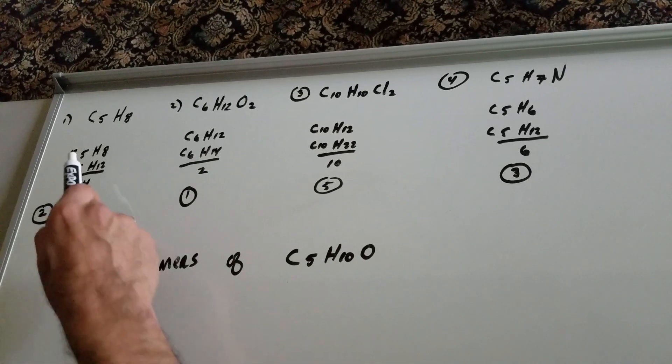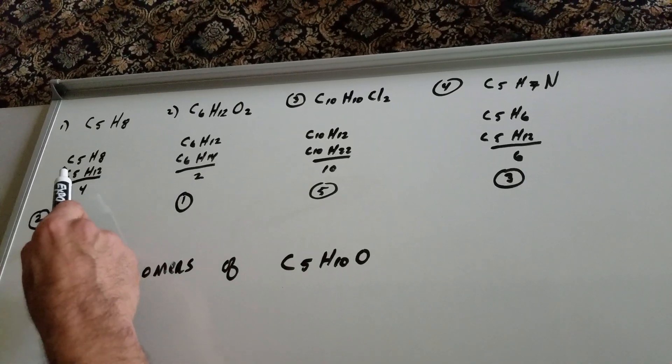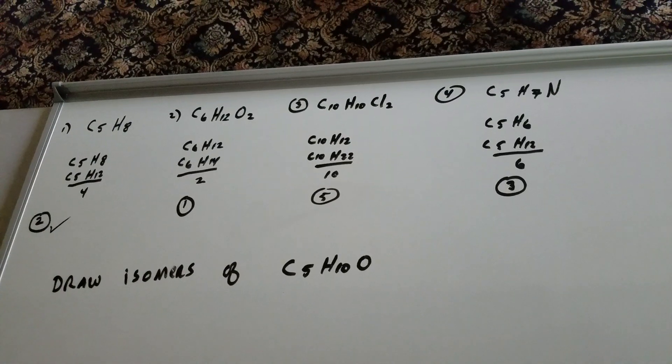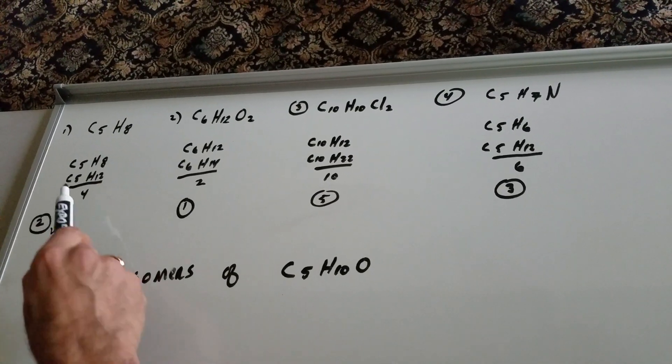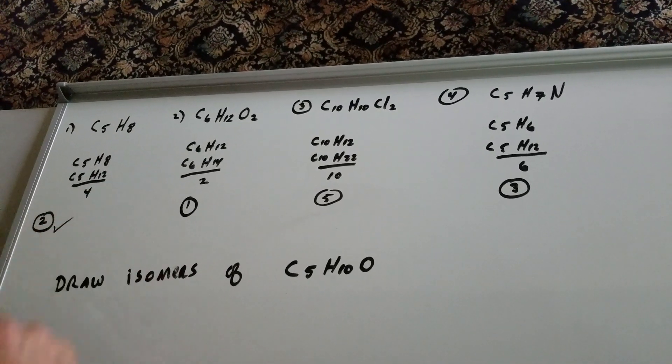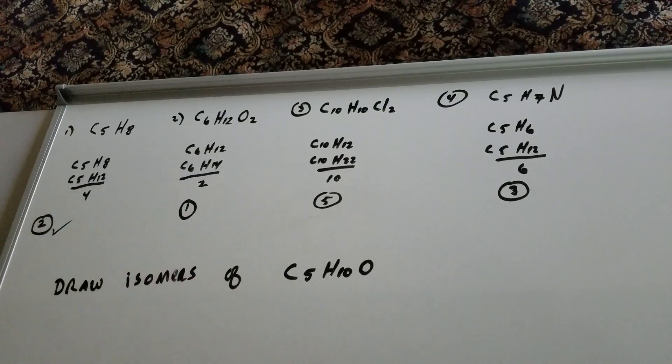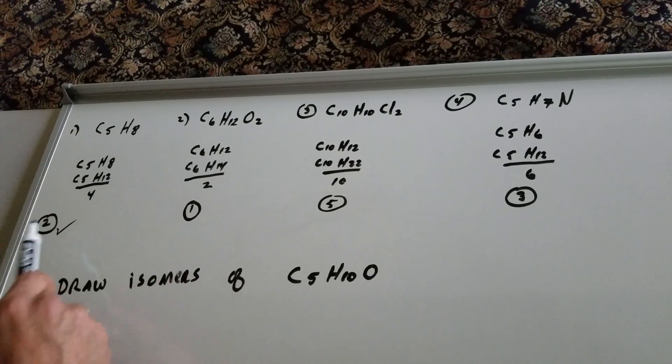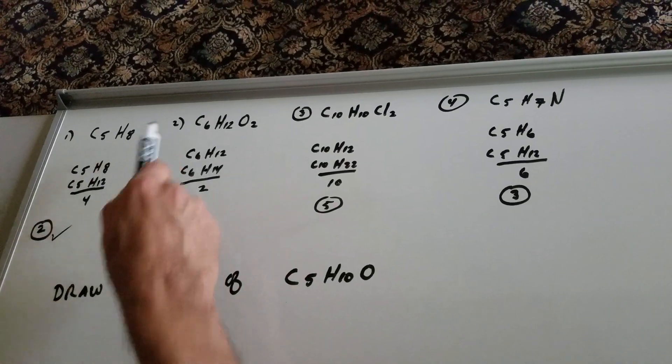So one more time, take the original. Underneath it, write the nearest alkane. And when I did that, which is double plus two, you subtract the difference of Hs and cut it in half.